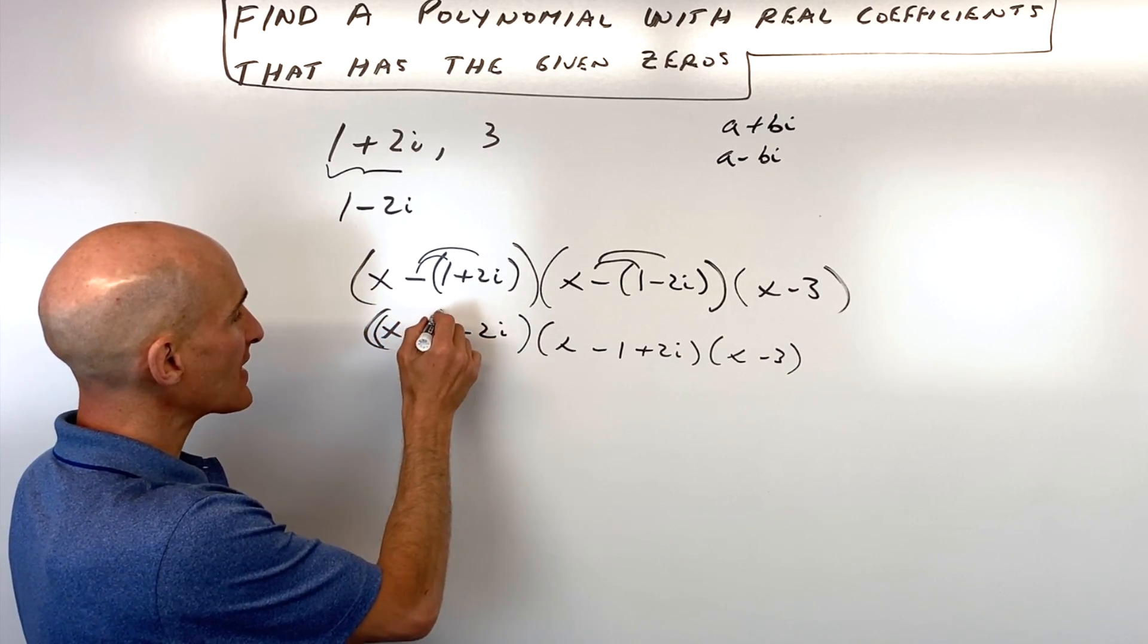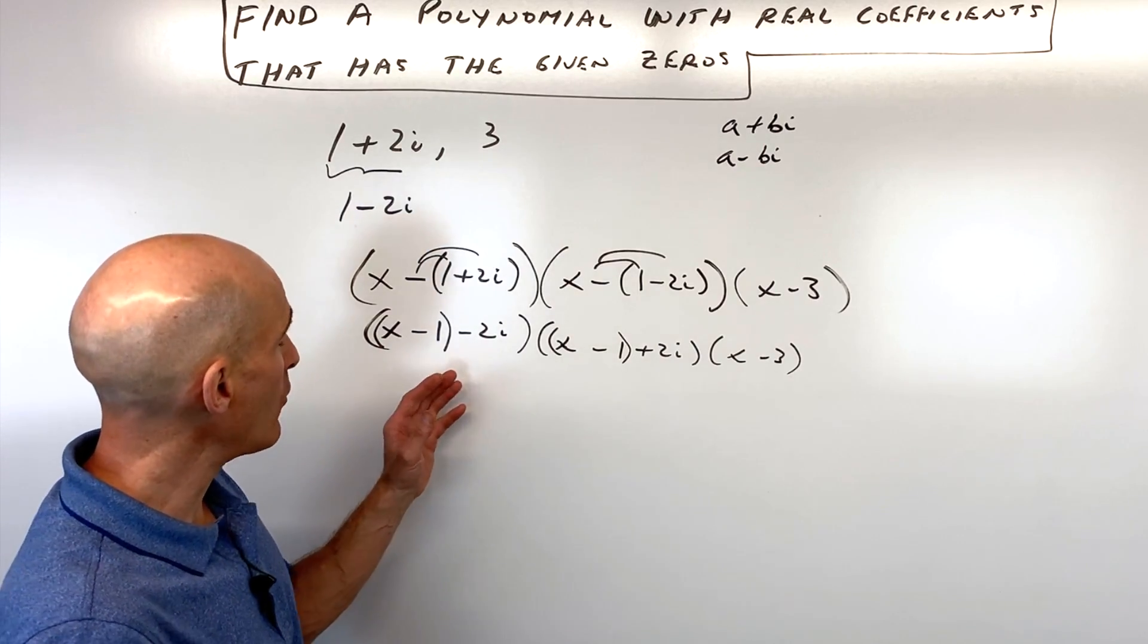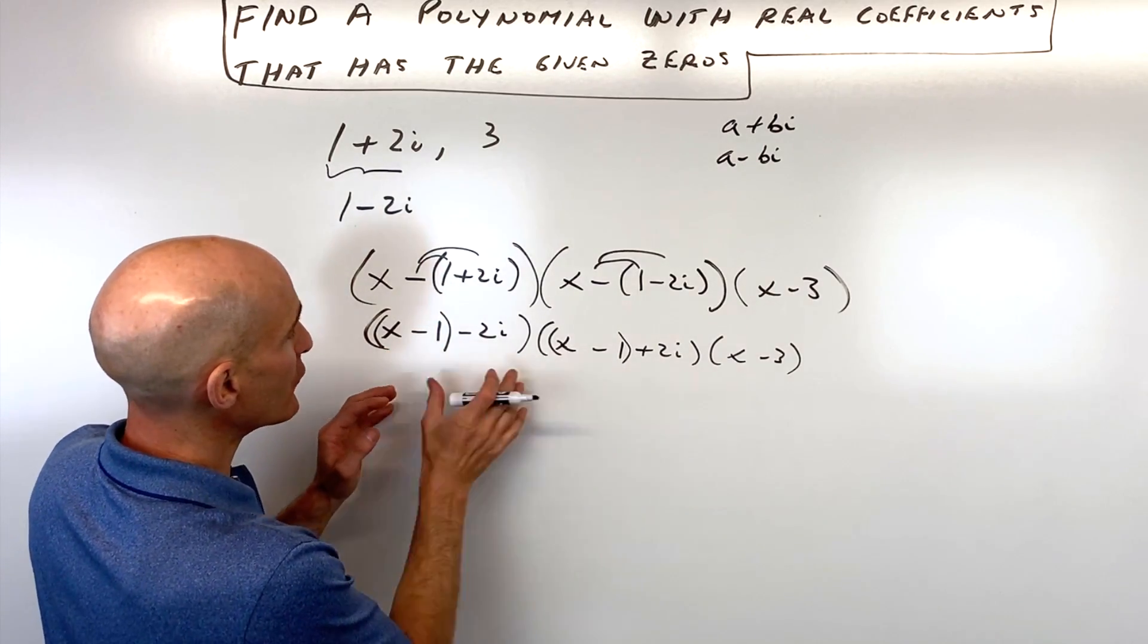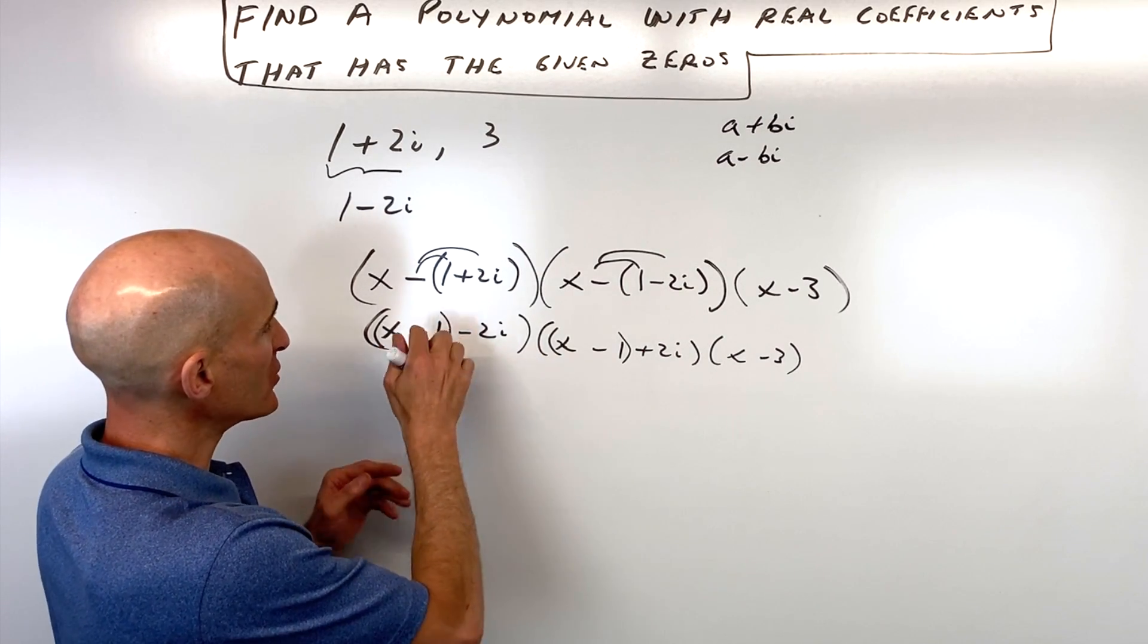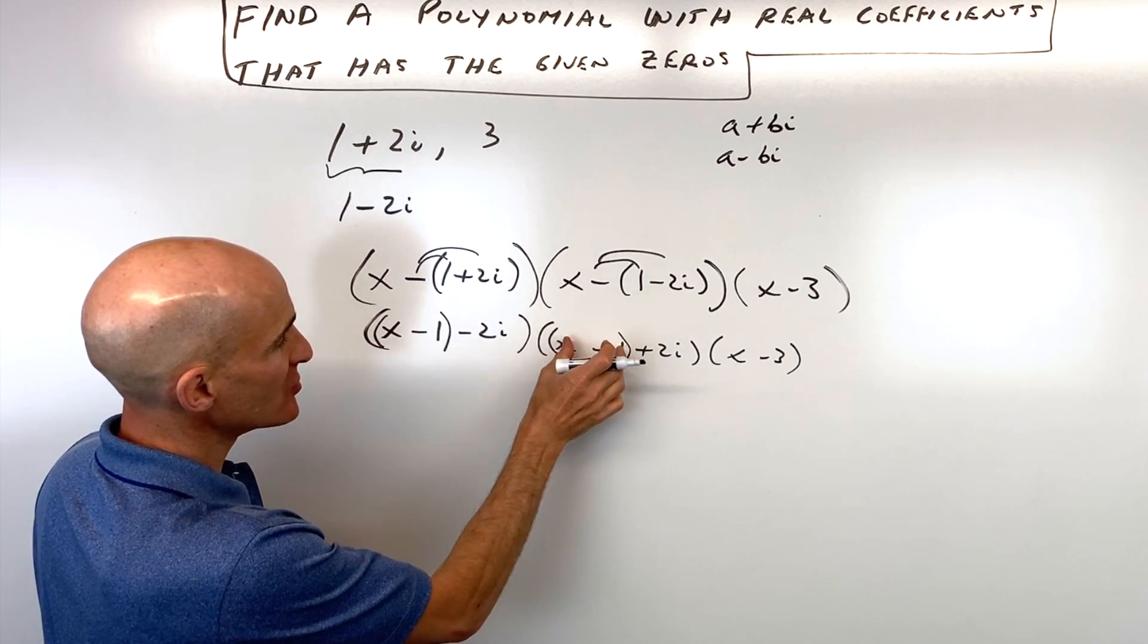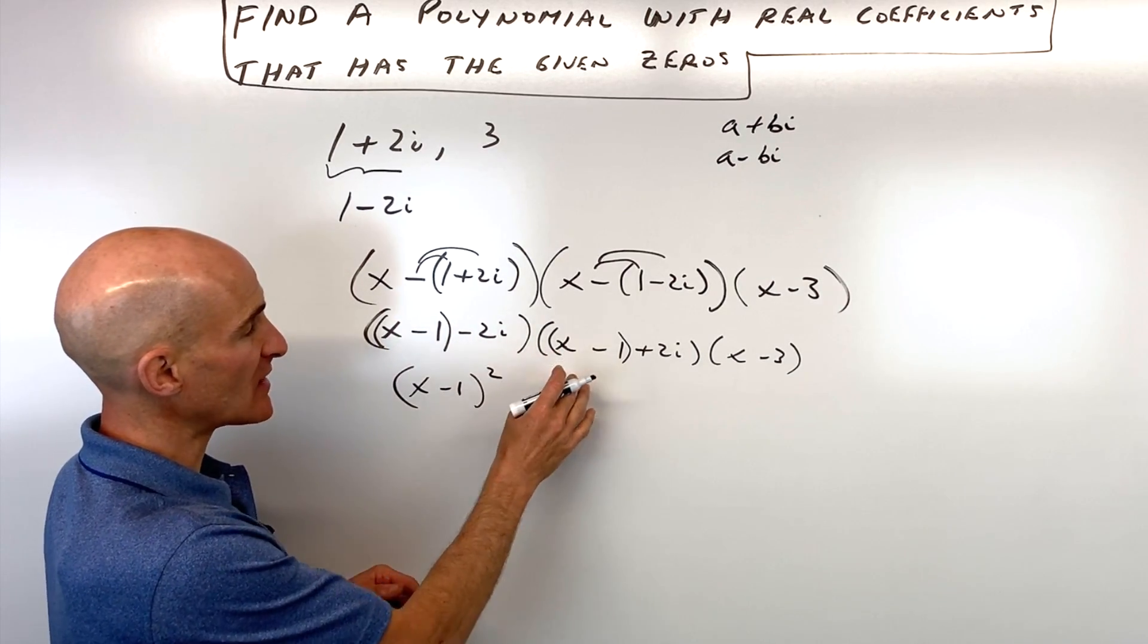So what we can do now is I'm going to group the x minus one, like that together. So now we're going to multiply these two groups together first. So if we use the FOIL method, we take this term times this term. Just think about the distributive property. This is going to give us x minus one squared, because x minus one times x minus one.